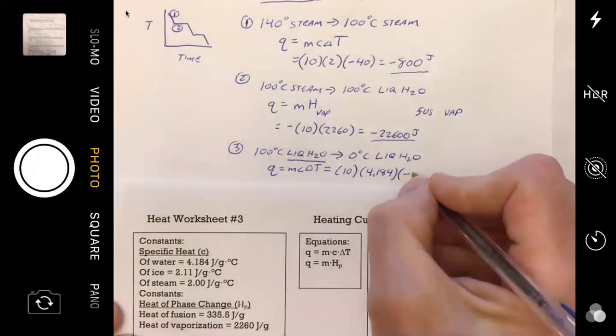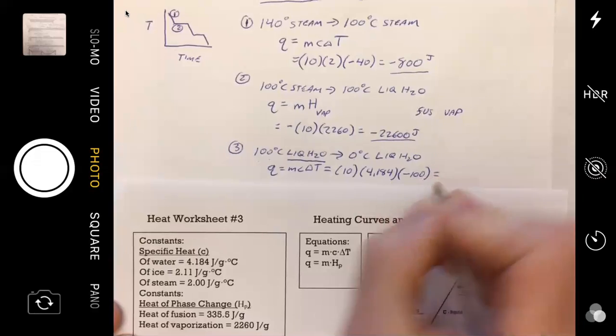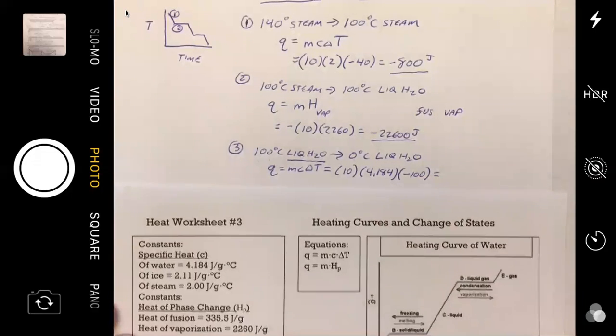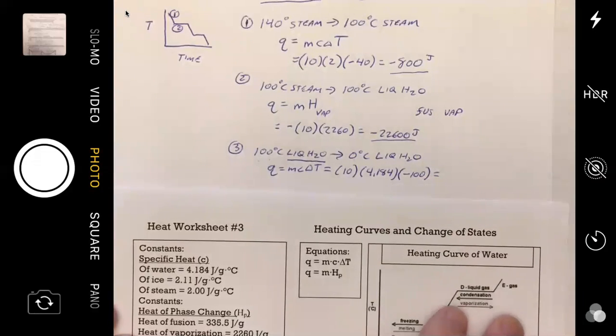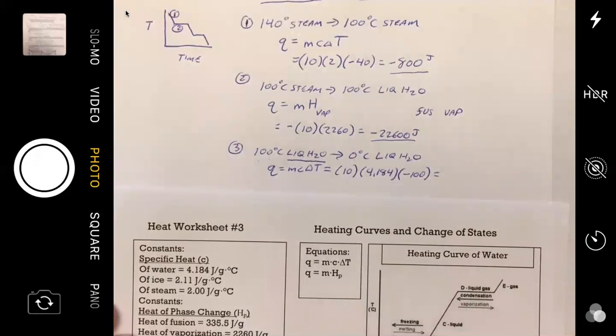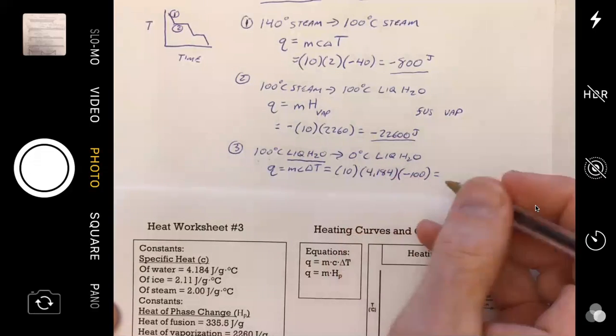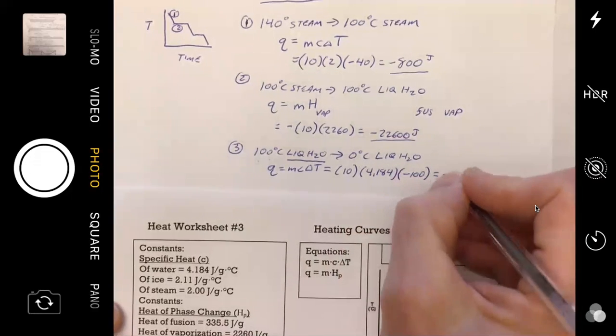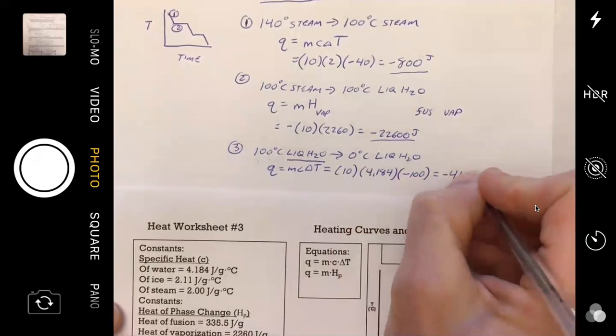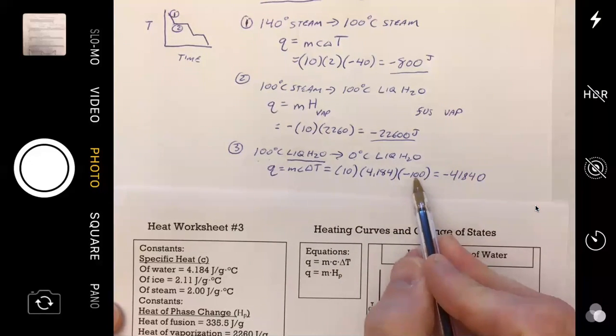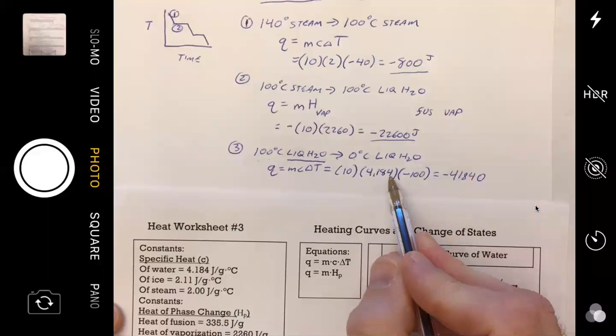That is telling me that I have to have 4.184 joules of energy to change one gram of water by one degree Celsius. And then Lauren, I'm going to finish it off here. What is the total temperature change here going from 100 to zero? Negative 100. And that negative sign is important because am I gaining or losing energy here? Losing. Perfect.